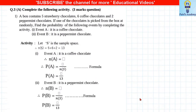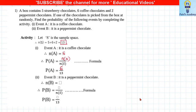A box contains 5 strawberry, 6 coffee, and 2 peppermint chocolates. Total nS = 13. P(coffee chocolate) = 6/13. P(peppermint chocolate) = 2/13.